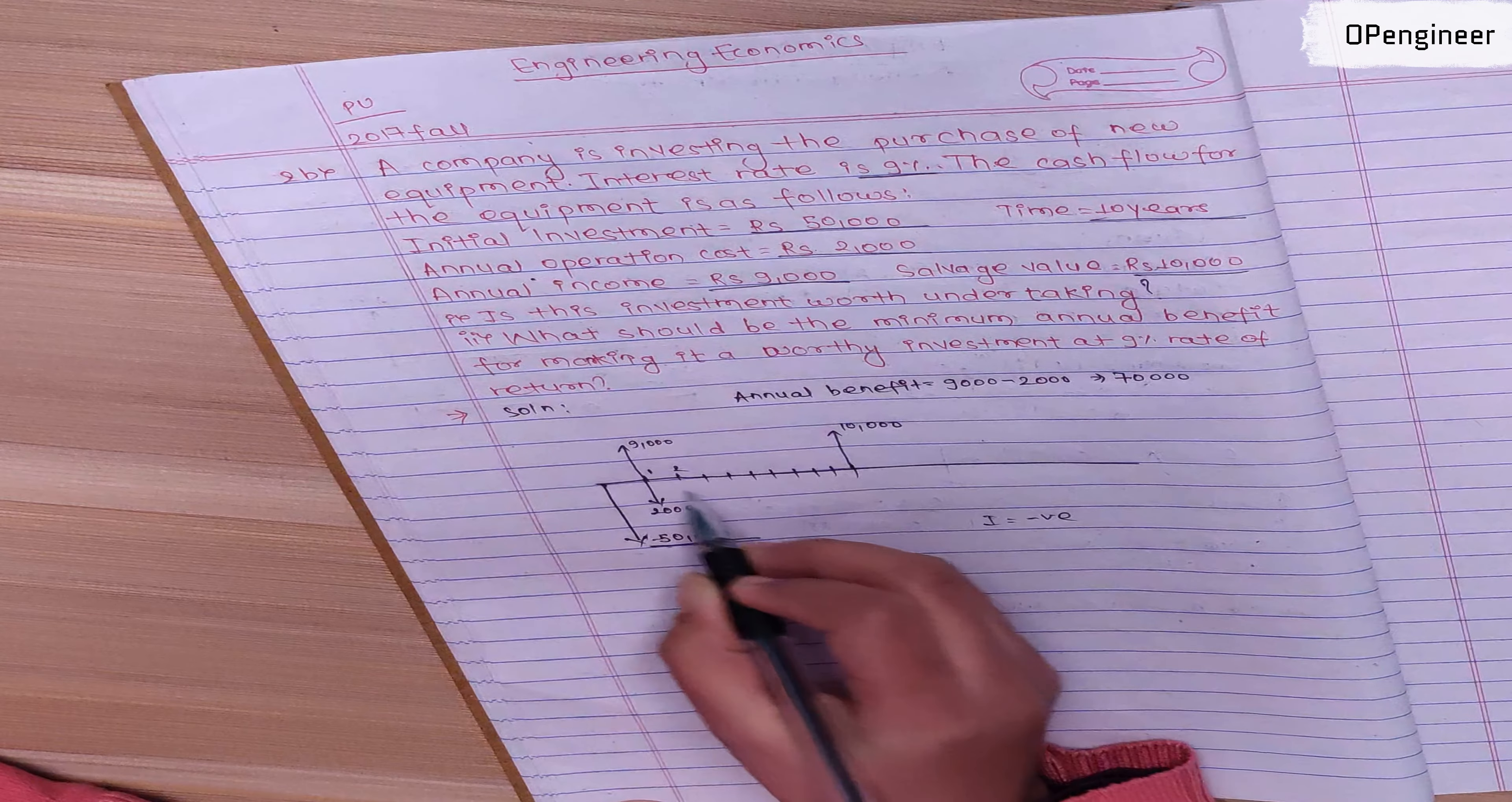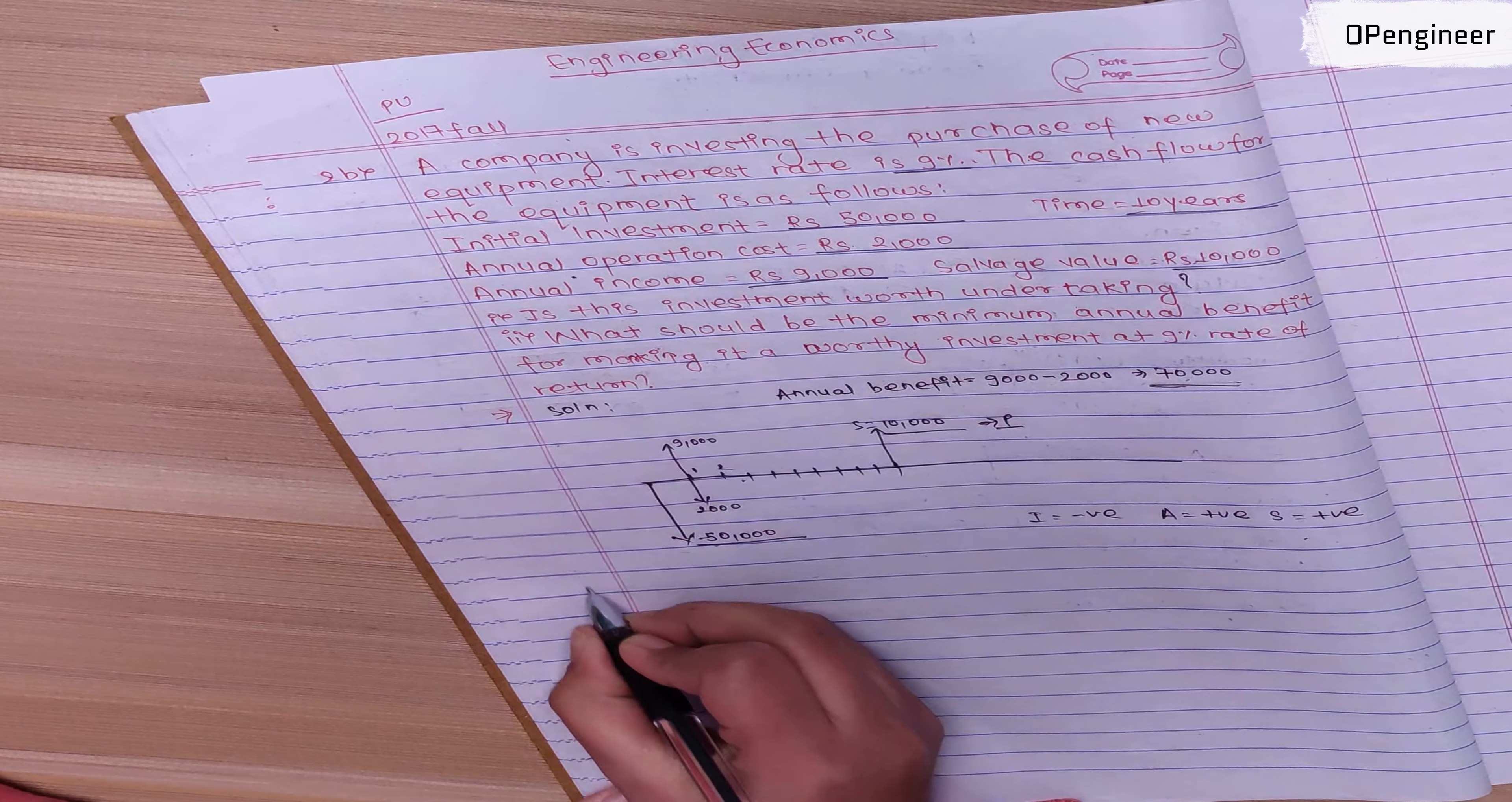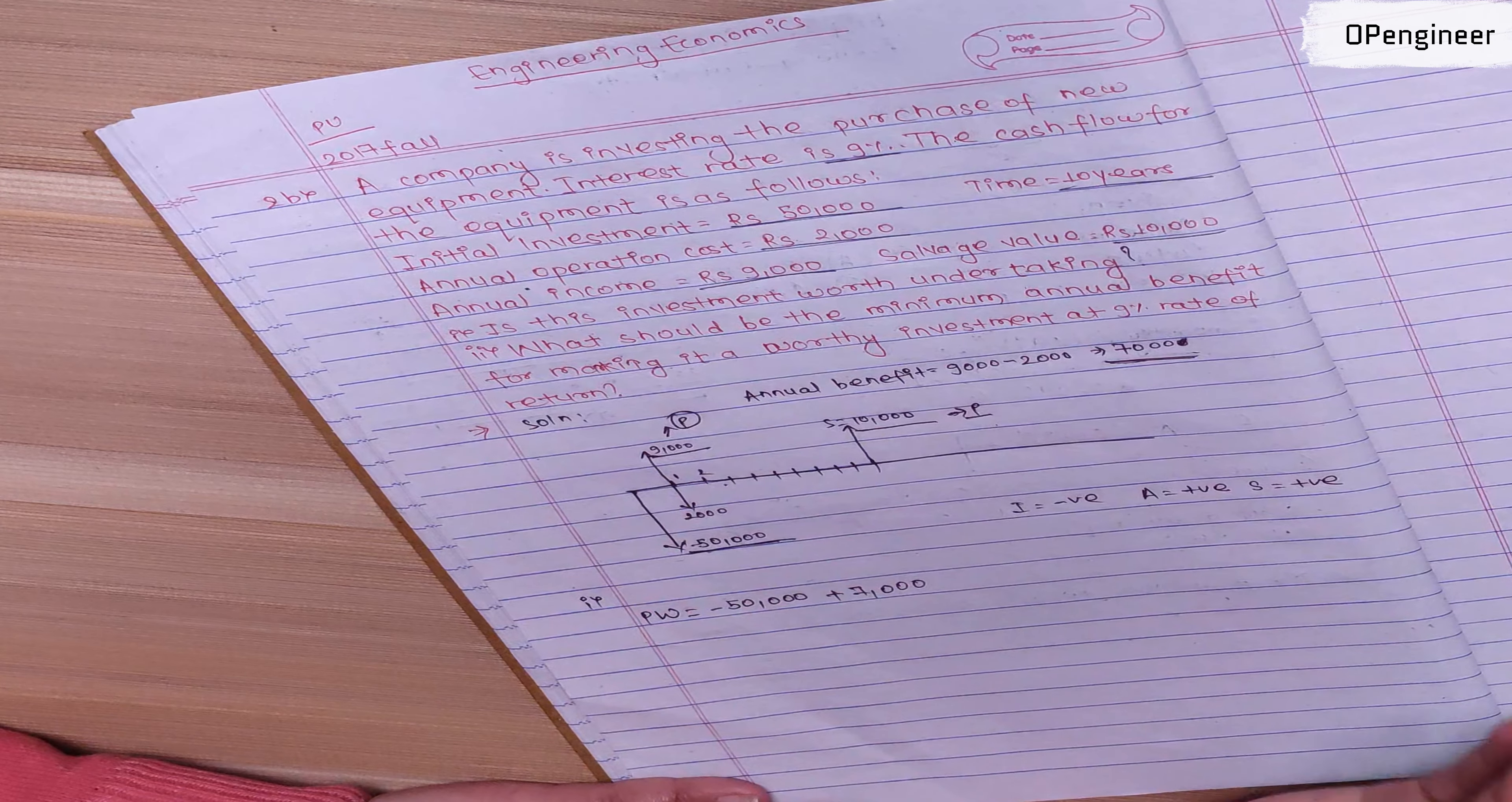The annual benefit is 7,000, which is the annual income minus operation and maintenance cost. I need to convert the annual benefit to present worth and the salvage value from future to present.